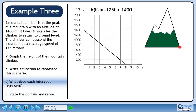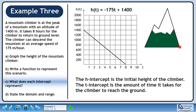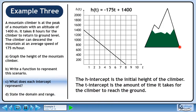In part C, we are asked what each intercept represents. The h-intercept is the initial height of the climber. The t-intercept is the amount of time it takes for the climber to reach the ground.